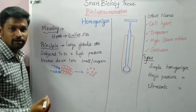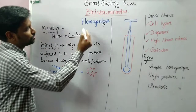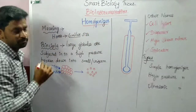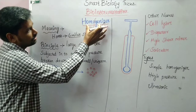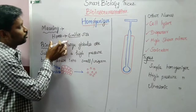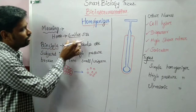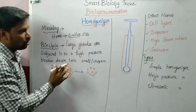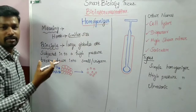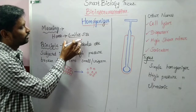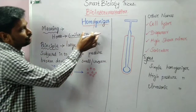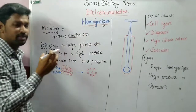We will start the class with the meaning of the instrument. The term 'homogenizer' can be separated into two parts: 'homo' and 'genizer.' Homo means similar in size or shape, and genizer means to make something. So altogether, homogenizer means 'similar size maker.'